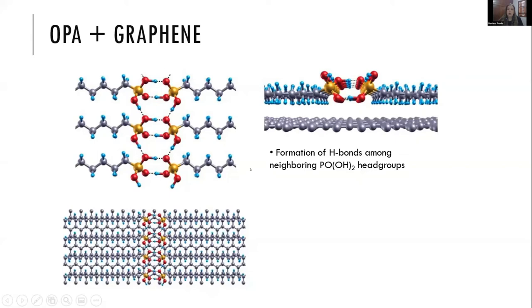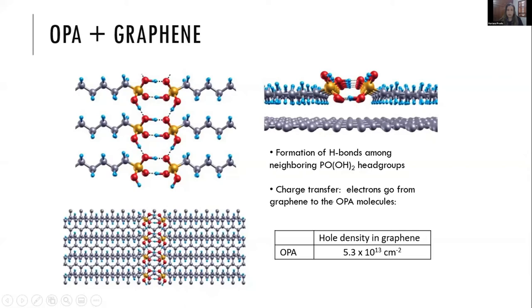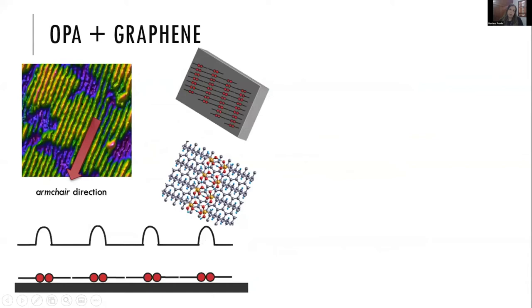Our calculations also predicted charge transfer: electrons from the graphene to the OPA molecules, leaving graphene with 5.3 times 10 to the 13 per square centimeter p-type doping. We attribute the corrugation in the AFM image to the head groups of neighbor molecules. Since the alkyl chain is in the zigzag direction, these lines of head groups are in the armchair direction, and that's why the period is twice the molecule length. We can use this system to uncover the crystallographic orientation of graphene without the need for atomic resolution.